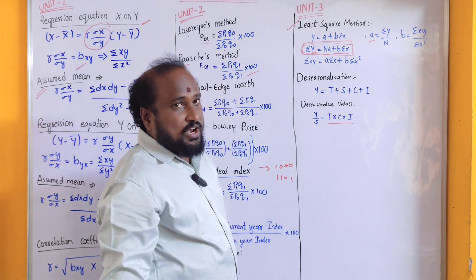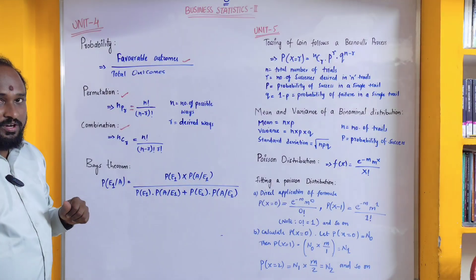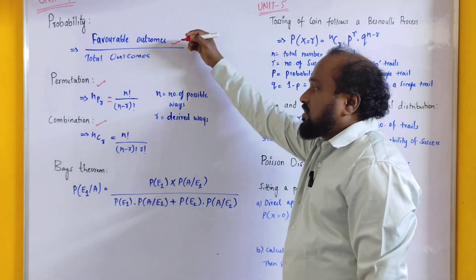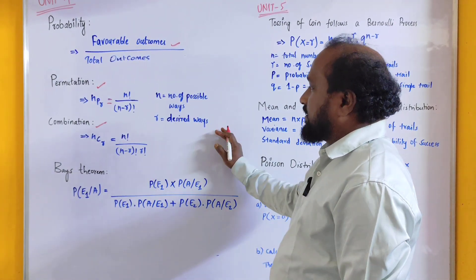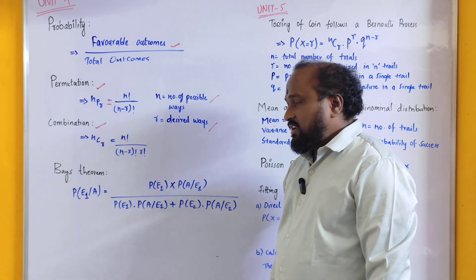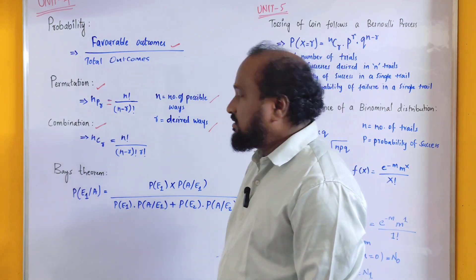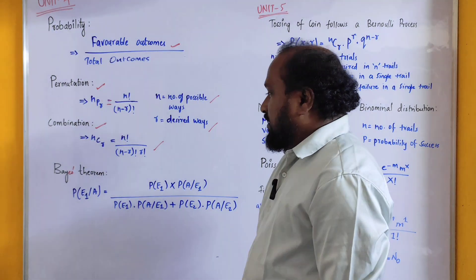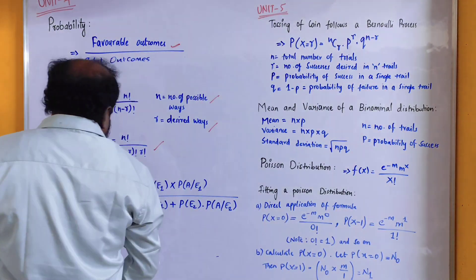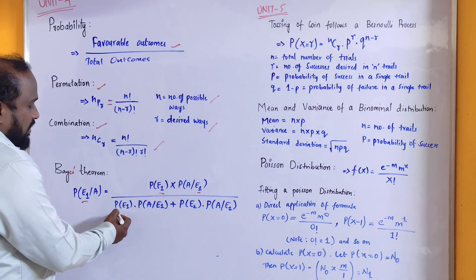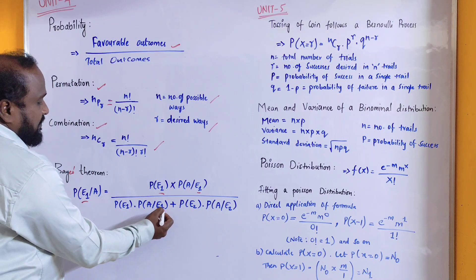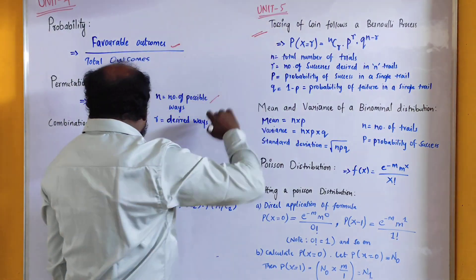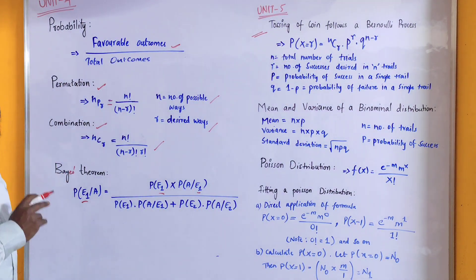Unit number four — probability. Probability equals favorable outcomes by total outcomes. Permutation: nPr equals N factorial by N minus R factorial, where N is the number of possible ways and R is desired ways. Combination: nCr equals N factorial by N minus R factorial into R factorial. For Bayes' theorem: P of E given A equals P of E1 into P of A given E1, divided by P of E1 into P of A given E1 plus P of E2 into P of A given E2. Bayes' theorem will be asked as a simple sum.